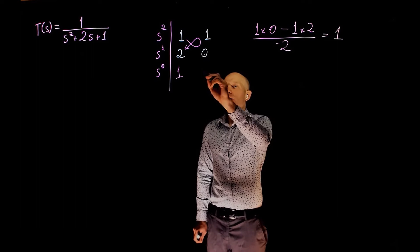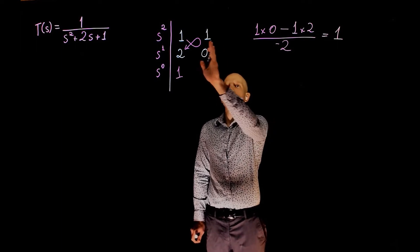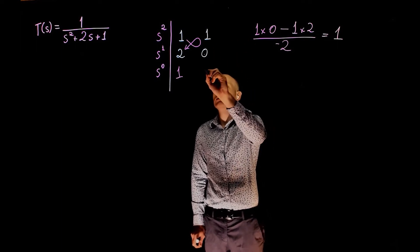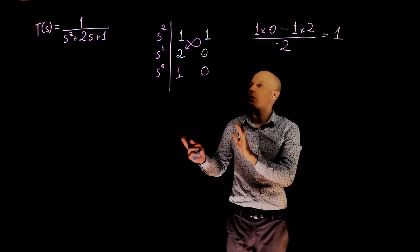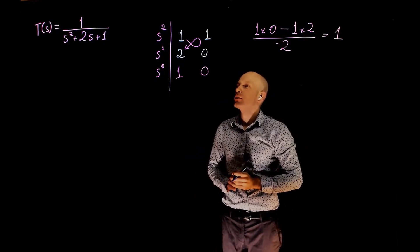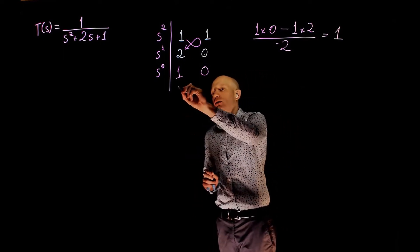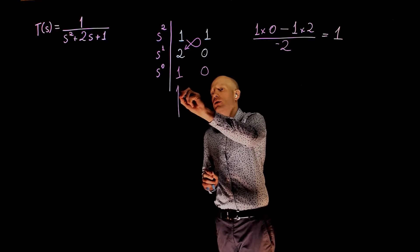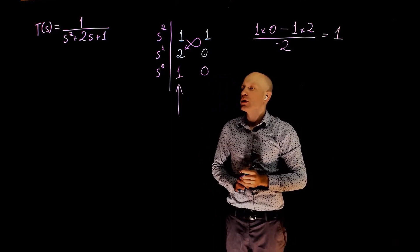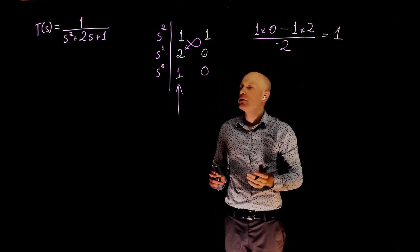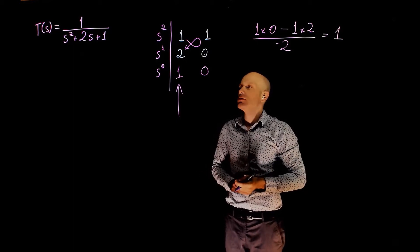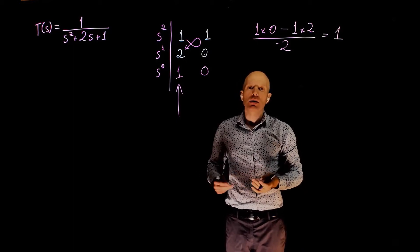The remaining element is 0, because there are no more elements to expand the matrix. This is now the completed Routh array. Looking at the first column only, all coefficients are positive, which means there is no sign change and the system is stable.